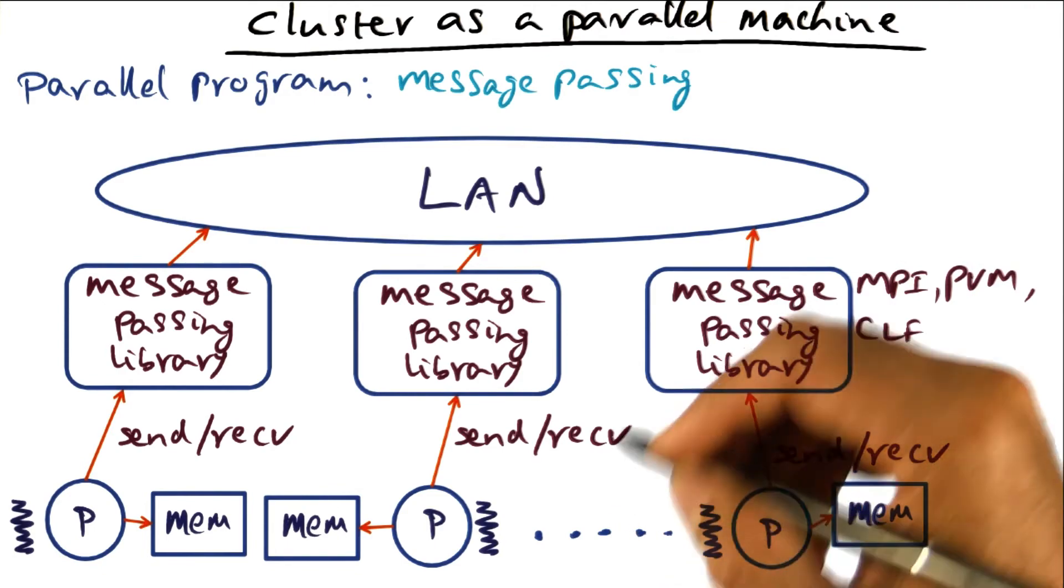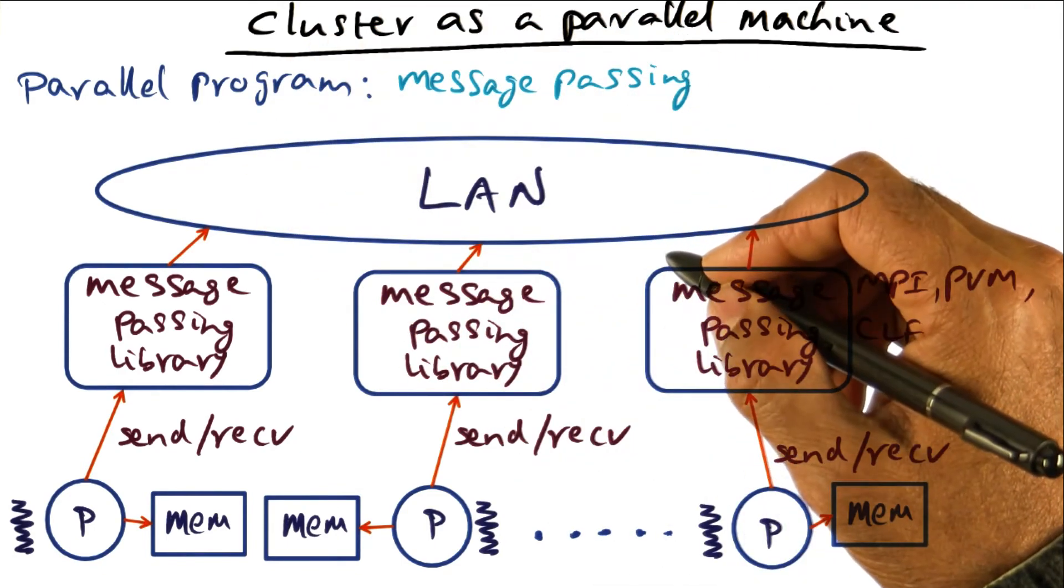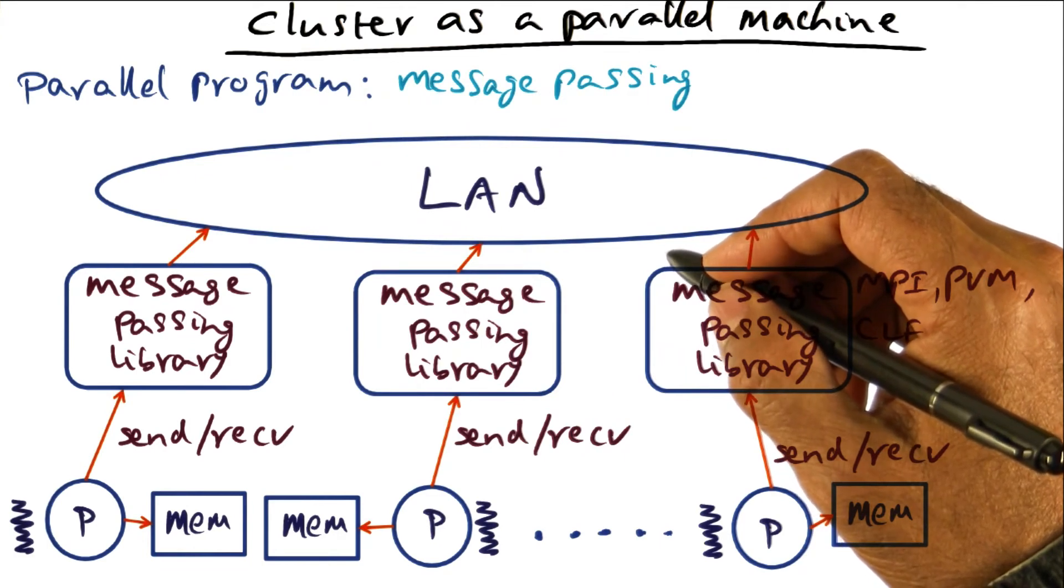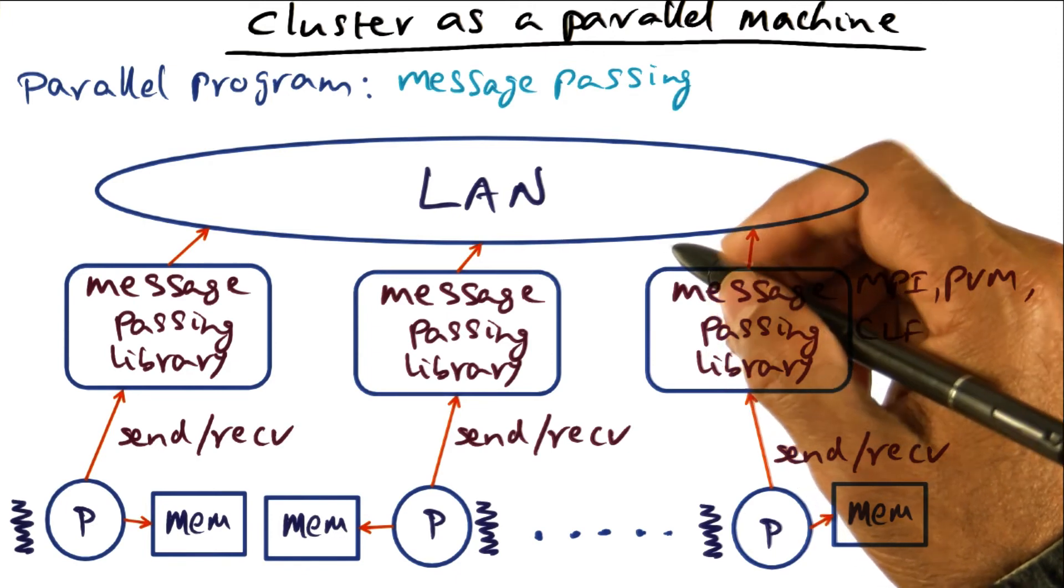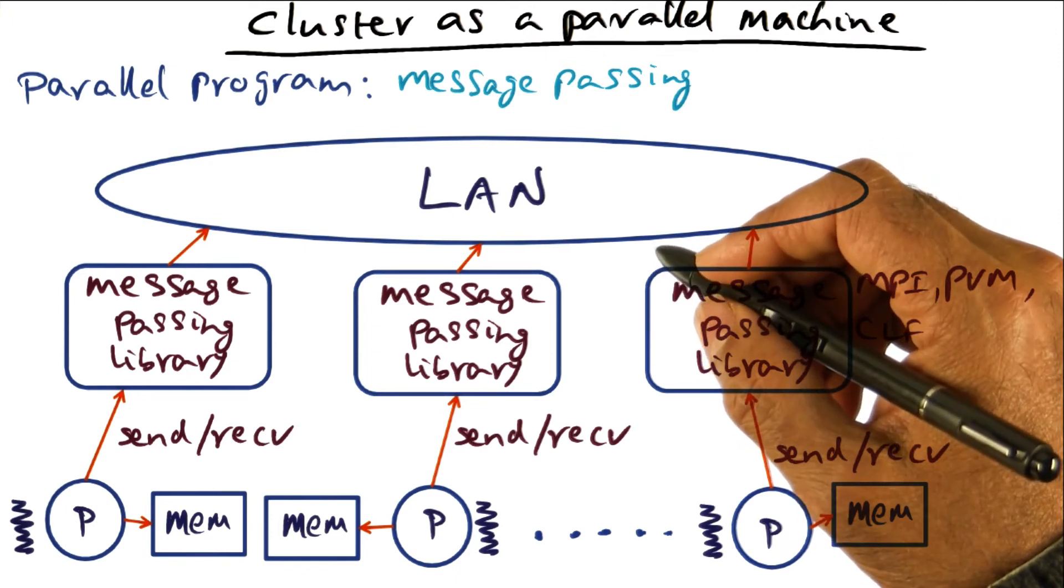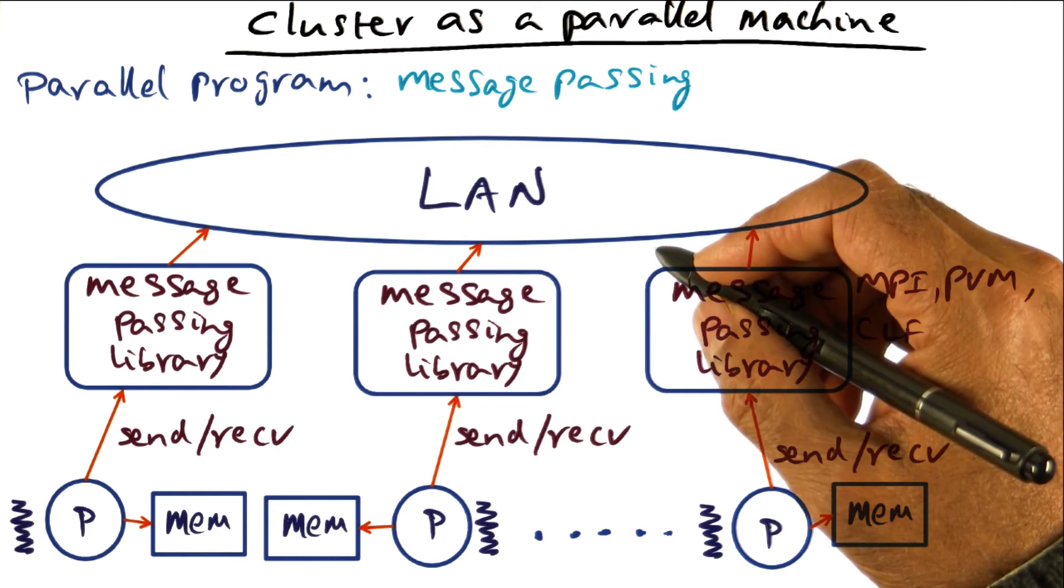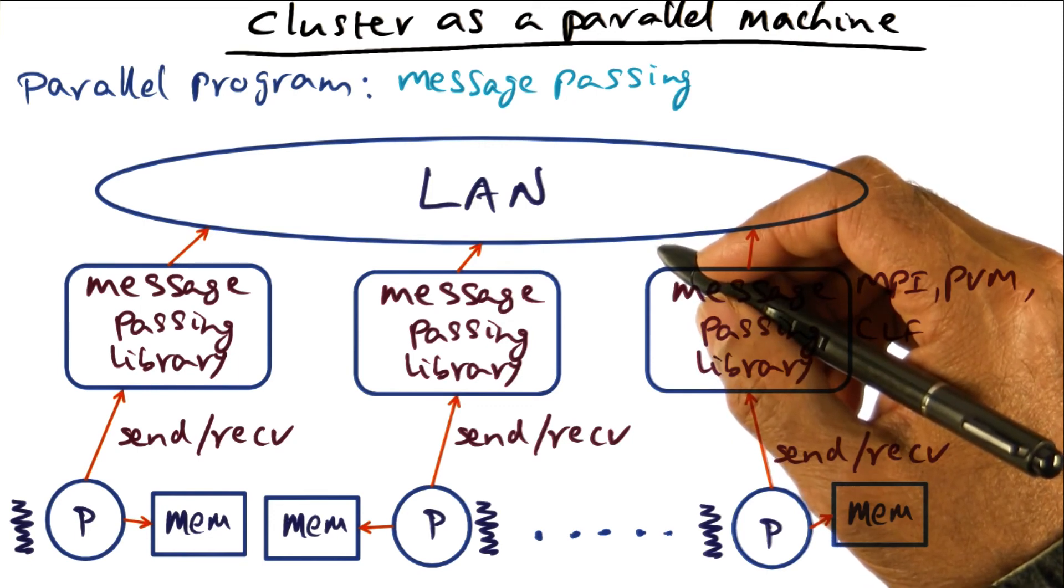Now the only downside to the message passing style of programming is that it is difficult to program using this style. If you're a programmer who's written sequential programs, the transition path to writing an explicitly parallel program is easier if there is this notion of shared memory.